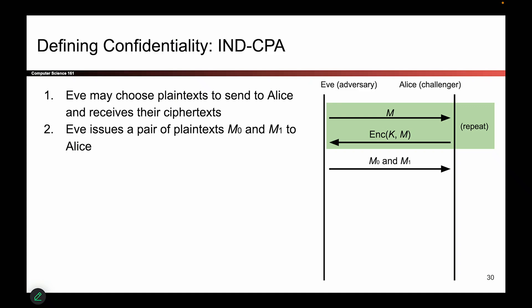Now here comes the actual challenge. Eventually Eve gets tired of sending messages and gets confident, saying she thinks she knows how to break the scheme. So Eve is going to choose her own two plaintexts, m0 and m1 — she can choose what these are — and she sends them over to Alice. As an example, let's say Eve chooses the words dog and cat. She says dog and cat — they could be any two words or any two bit strings — and she sends those two words over to Alice. That's the first step of the challenge.